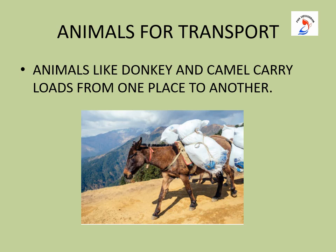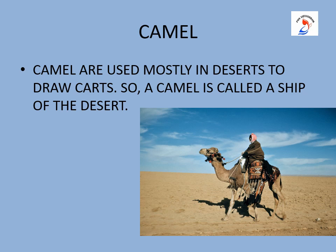Now we are going to see about animals used for transport. Before automobiles were invented, people mostly used animals to move from one place to another. Animals like donkeys and camels carry loads from one place to another. Camels are used mostly in deserts to draw carts, so a camel is called the ship of the desert — because it is adapted to live in the hot and dry climate of a desert. A camel can drink 200 liters of water in just 3 minutes and can go for 10 months without even a sip of water, as long as they get sufficient green vegetation and dew.